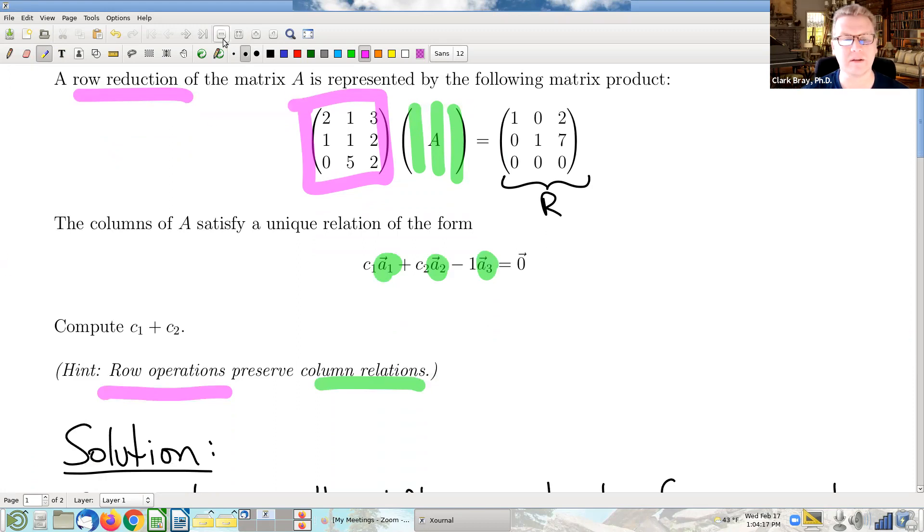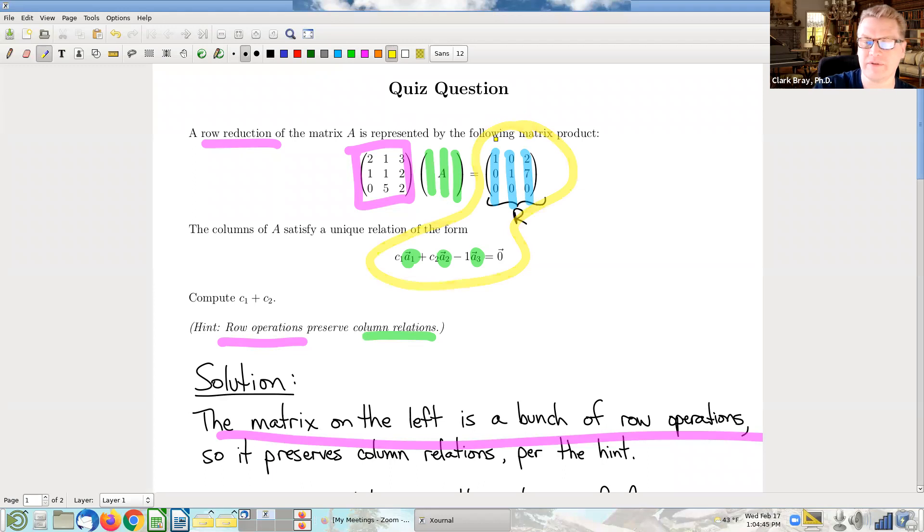So we're getting into the solution at this point. Let me get all this onto the screen here. This matrix on the left is a bunch of row operations. So it preserves the column relations. Or another way to say this is that the relations that we're looking for among the columns of A are the exact same relations as the relations among the columns of R. So the columns of R have this same relationship, okay, because row operations preserve column relations.